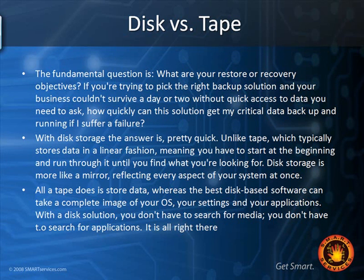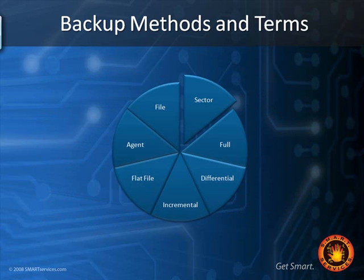Some key questions are: what are your restore and recovery objectives? That's a big factor when considering disk-based backups. Data loss usually breaks down like this: half the time you lose everything and need a full restore; half the time you lose just one or two files, and often you don't realize it right away. That's where disk-based backups require a lot of disks. Before going further, let's get some backup terms out of the way — there are lots of different terms for different parts of the backup process. On the right you'll see full, differential, and incremental.